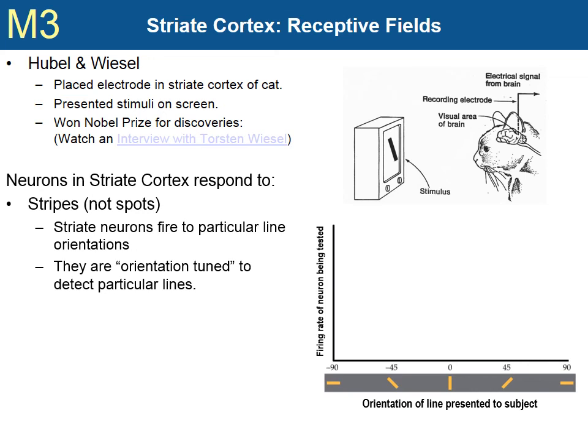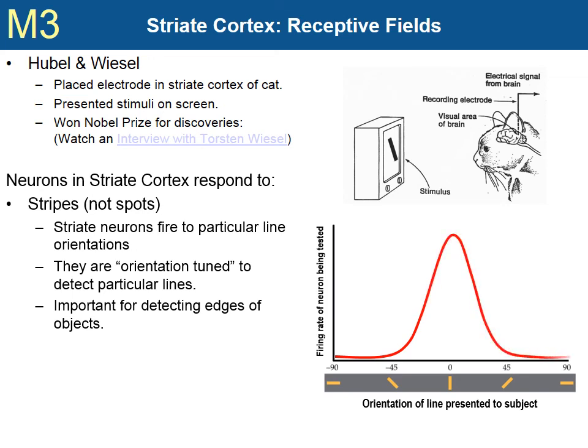The graph below shows the firing rate of a striate cortex neuron when lines are presented at varying orientations. Hubel and Wiesel found that striate neurons not only respond when a line is presented in their visual field, but that the amount of response depends on the line orientation. The striate neuron recorded responds the most when the line is perfectly vertical, and not at all when the line is horizontal. In other words, the neurons were tuned to particular line orientations. This suggests that neurons in the striate cortex respond to the edges of objects, part of the process of object recognition.